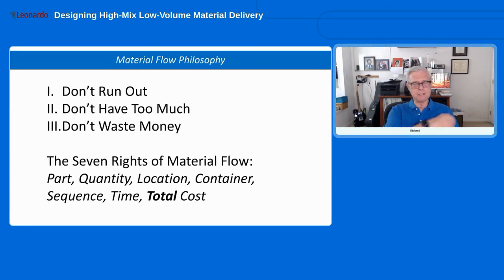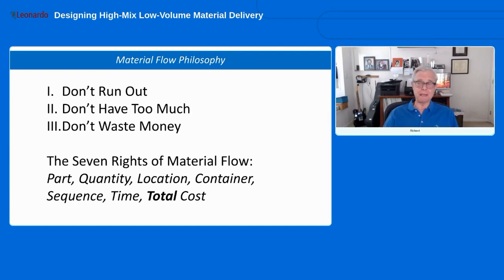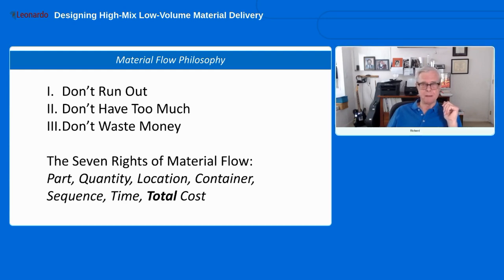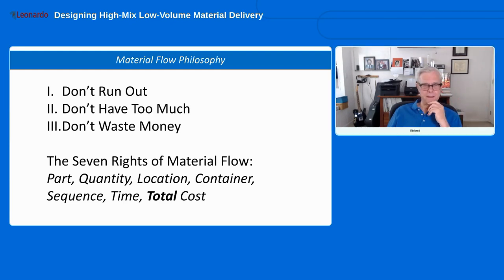Our basic goals for material management are obvious at a high level: we don't want to run out — we don't want to stop the line because we don't have the parts and a worker is sitting there with nothing to work on. However, we don't want to overcompensate by having too much. We're looking for the Goldilocks level of inventory: not too much, not too little.